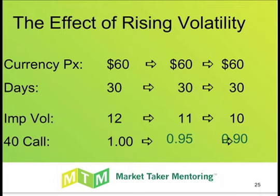You notice that each time implied volatility rose a point, we saw the value of the option rise by a nickel. And each time implied volatility fell a point, we saw the option value fall by a nickel. In this example it happens to be a nickel every time, but with a different currency or different number of days till expiration, it could be something other than a nickel — but it's always a very specific number. It's important to understand what that number is, because you're not really trading implied volatility. You can't call up your broker and say you made five implied volatility points — that doesn't translate to a check. You're trading option value, and that does equate to real money. So implied volatility is the figure that changes and affects your option value, but you need to understand how those changes in implied volatility translate into changes in option value.